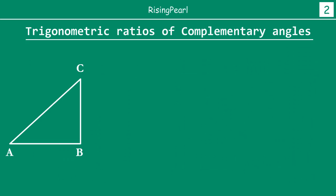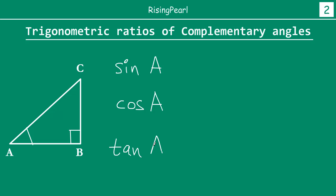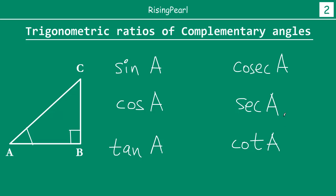Now what about the trigonometric ratios of complementary angles? So here we have our same triangle ABC. We are going to write the six trigonometric ratios for angle A first: sine A, cos A, tan A, cosec A, and cot A.